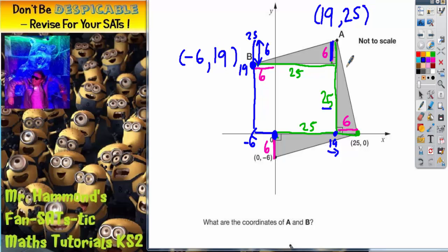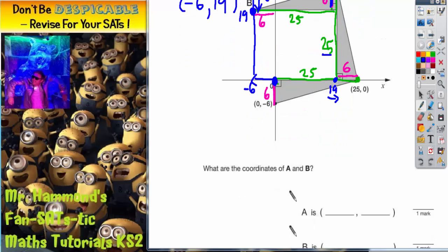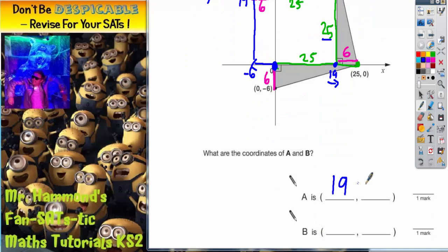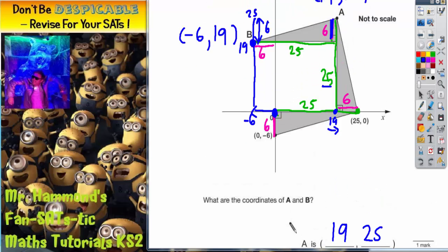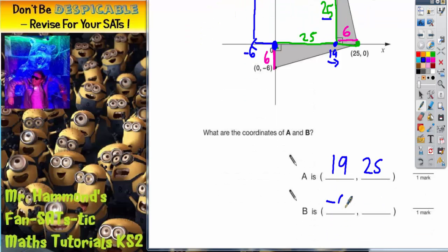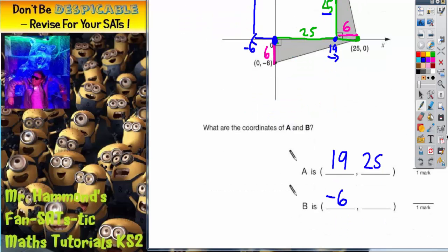So there's your two points. A is 19 across, 25 up. And B is negative 6 across and 19 up. And there's the two answers.